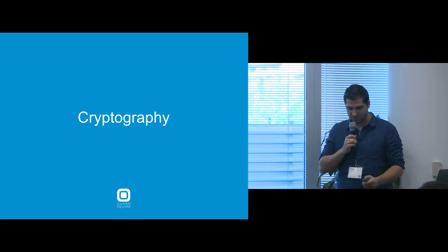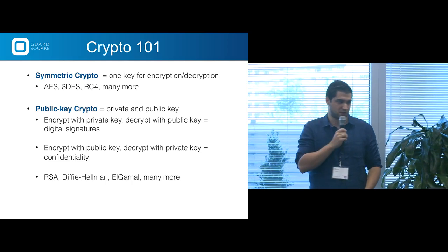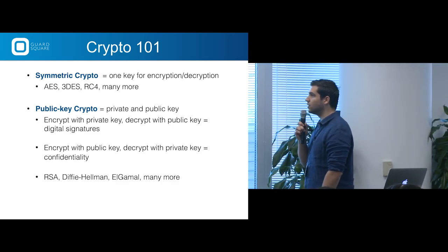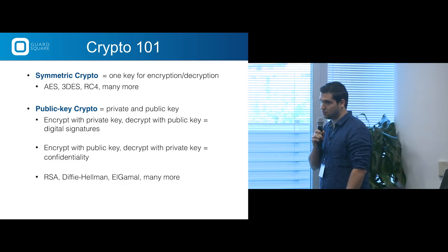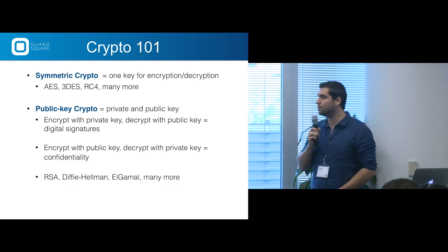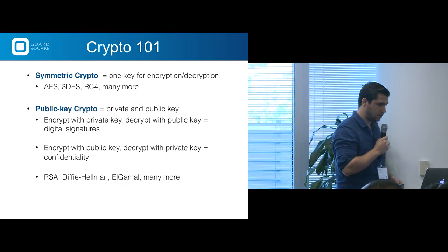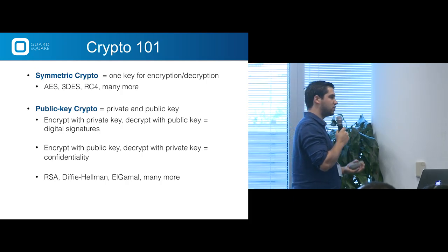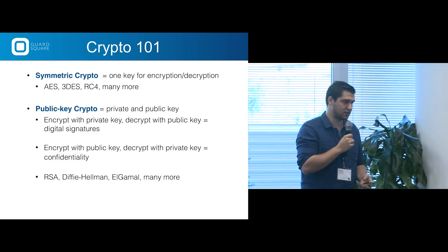Let's start with cryptography. We have symmetric crypto, which uses one key for encryption and decryption. Examples are AES, triple DES, and RC4. The second type is public key crypto, which uses a private and a public key. The way you use these keys determines the use case: if you encrypt with a private key and decrypt with a public key, you can verify a digital signature. If you encrypt with a public key and decrypt with a private key, you have confidentiality. Examples are RSA, Diffie-Hellman, and Elliptic Curve.